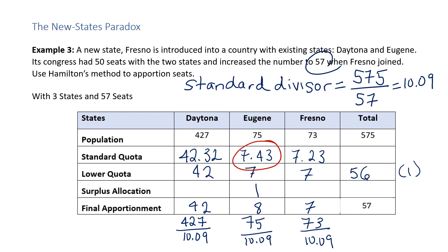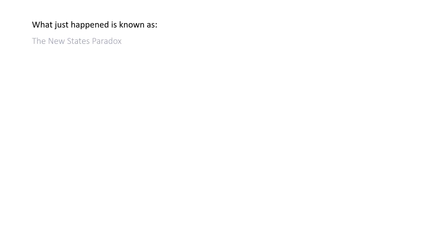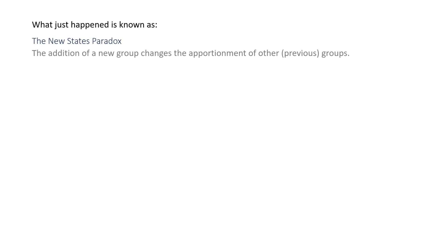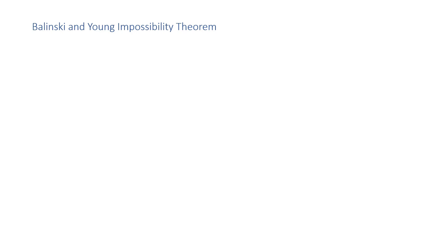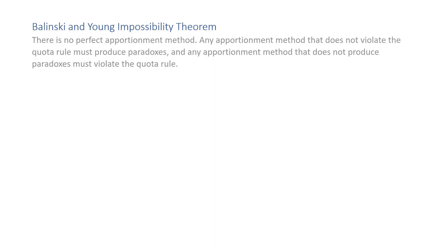Daytona lost a seat — somebody came in and Daytona lost a seat, and Eugene gained a seat. What just happened is known as the New States Paradox: the addition of a new group changes the apportionment of other previously existing groups. I encourage you to look up the historical context of where the New States Paradox first occurred. Which brings us to Balinski and Young's Impossibility Theorem, which states: there is no perfect apportionment method. Any apportionment method that does not violate the quota rule must produce paradoxes, and any apportionment method that does not produce paradoxes must violate the quota rule.